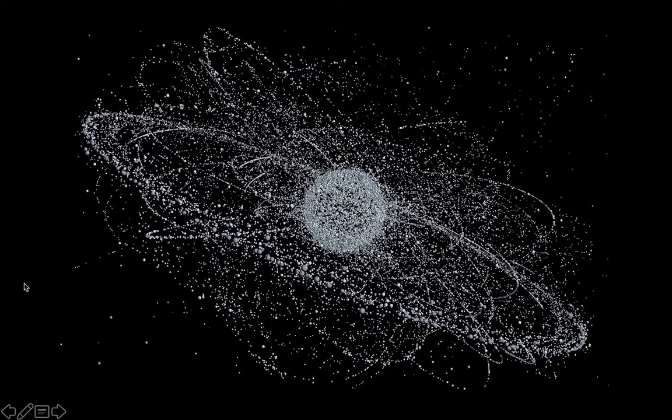This is one of my favorite images to show in this class. What you're looking at are a bunch of objects in orbit around Earth. So in this lesson, we're talking about satellite meteorology. According to NORAD, the U.S. Space Surveillance Agency, and NASA, we think there's somewhere between 20,000 and 30,000 different objects in orbit around Earth. Each one of these dots represents one of those objects.